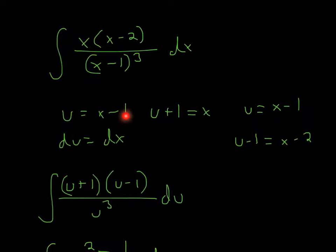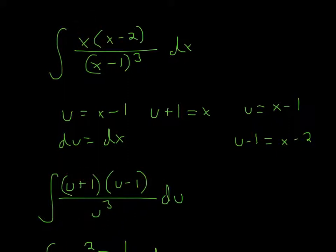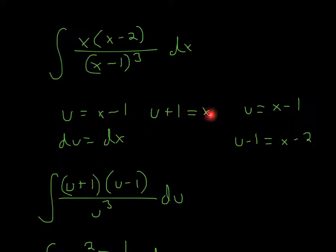Right now we have u, but we have two x's, so we need to get rid of those two x's. We need something for x. What we can do is manipulate this equation — add plus 1 to both sides. So u plus 1, the plus 1 and minus 1 cancel, giving us x. So we can substitute u plus 1 for x.